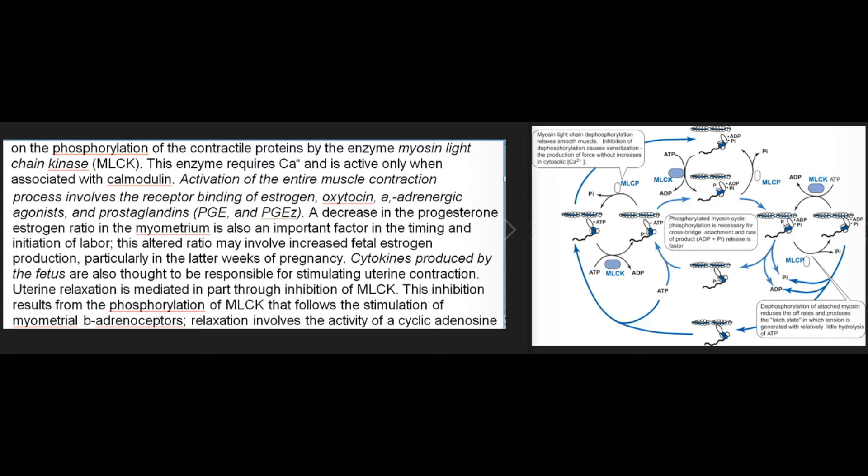Activation of the entire muscle contraction process involves receptor binding of estrogen, oxytocin, alpha-adrenergic agonists, and prostaglandins (PGE and PGF). A decrease in the progesterone-to-estrogen ratio in the myometrium is also an important factor in the timing and initiation of labor. This altered ratio may involve increased fetal estrogen production, particularly in the latter weeks of pregnancy. Cytokines produced by the fetus are also thought to be responsible for stimulating uterine contraction.